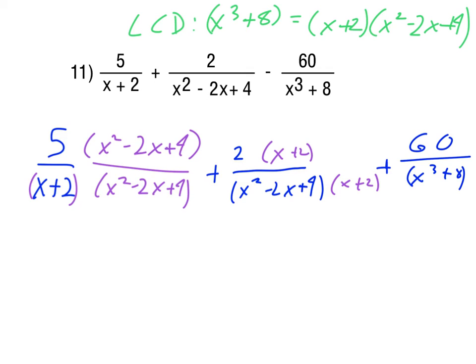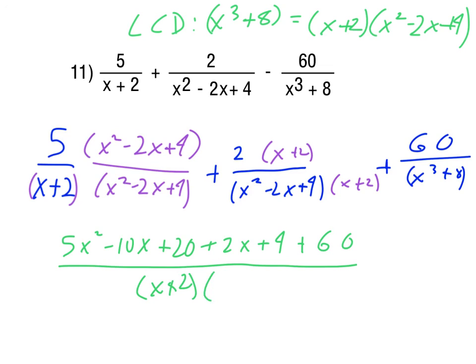In our numerator, for the 5, we would distribute that across. We'd have 5x squared minus 10x plus 20. Again, making sure that we distribute that all the way across. We would add that to the 2 times x plus 2, so 2x plus 4. And that would also get added to the 60. And now I can just write that all as over the single LCD x plus 2 and then x squared minus 2x plus 4.